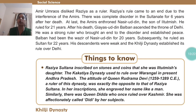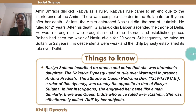There was complete disorder in the Sultanate for six years after her death. At last, the Amirs enthroned Nasruddin, the son of Altomish. He ruled for 21 years. After his death, Gyasuddin Balban ascended the throne of Delhi. He was a strong ruler who brought an end to the disorder and established peace.